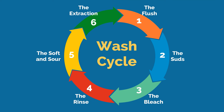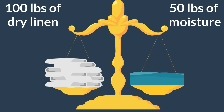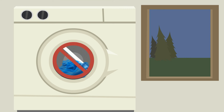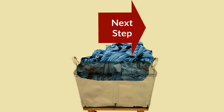The sixth step is the extraction. Extraction removes 50% of the moisture in the linen, which takes one to 12 minutes depending on the equipment and fabric characteristics. For example, 100 pounds of dry linen will contain 50 pounds of moisture after the extract step is completed properly. Damp items should not be left in machines overnight. Once extraction is complete, the wet laundry is ready for the next step in the laundering process.